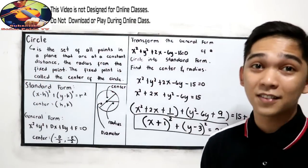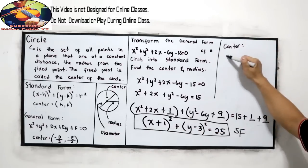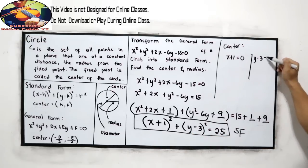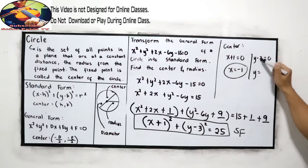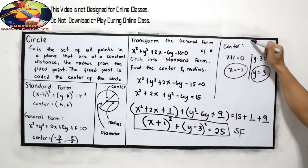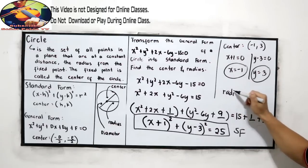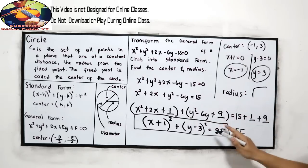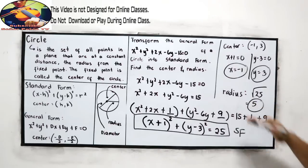We are now ready to find the center and radius. Equate x plus 1 to 0: x equals negative 1. Equate y minus 3 to 0: y equals positive 3. So the center is (negative 1, positive 3). For the radius, take the square root of 25. Since 25 is a perfect square, the square root of 25 is positive 5. So the radius is 5.